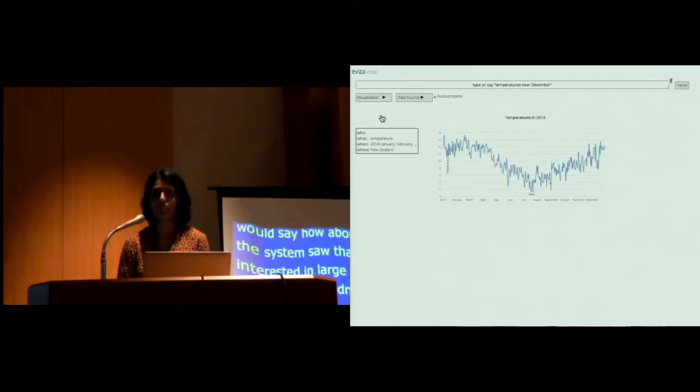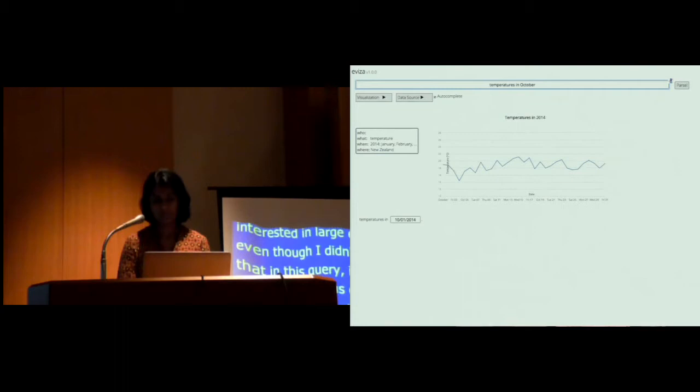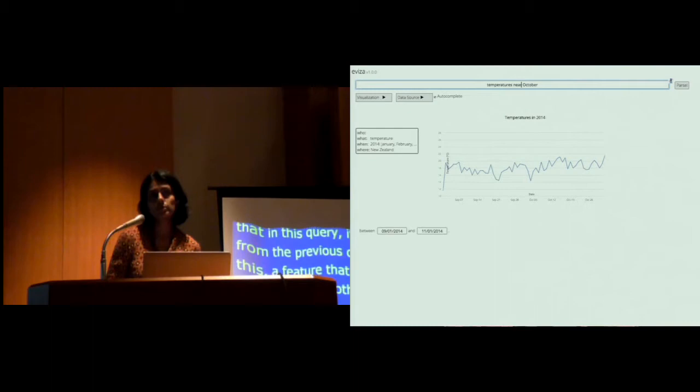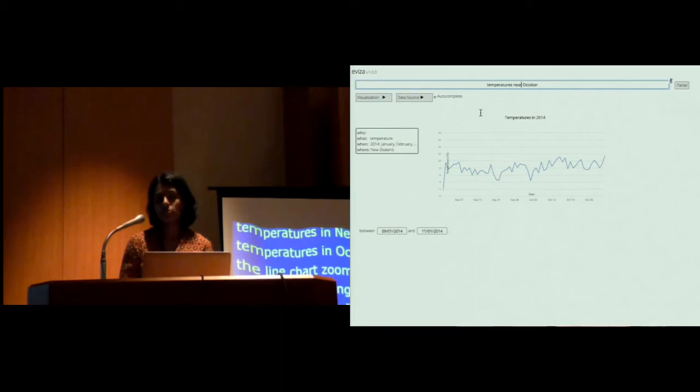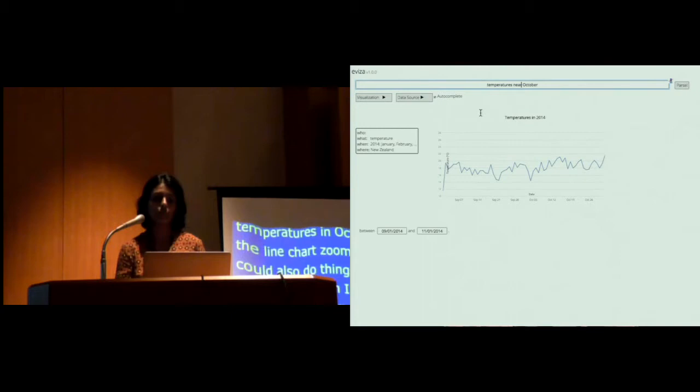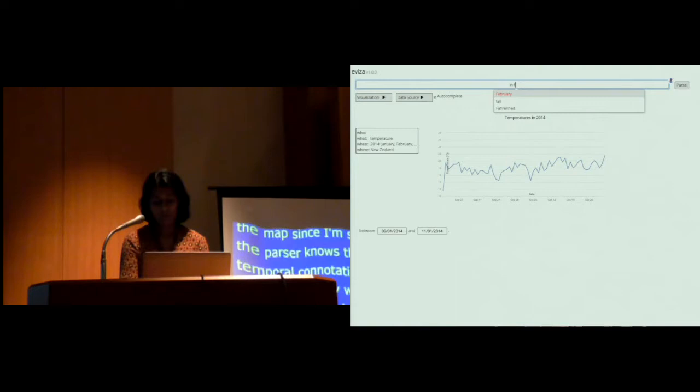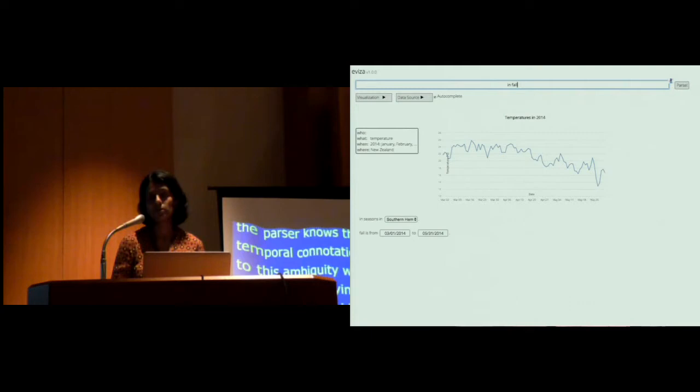Moving on to another visualization, this is a time series line chart showing temperatures in New Zealand. And I can say temperatures in October. And obviously the line chart zooms into October. But I could also do things like near October. And even though I use near similar to the map, since I'm starting off with a viz, the parser knows that near here has a temporal connotation and adjusts it to be a month before and after October. And as a user, I can go to this ambiguity widget and modify that. In addition to querying for time-related information in the visualization, we have additional semantic enrichment with more time hierarchies, such as seasons and quarters and semesters. So I could say in fall. And even though fall is not explicitly encoded in the visualization, the system can recognize that and modify the visualization accordingly.